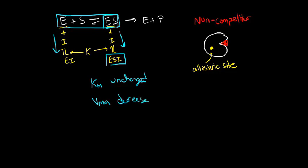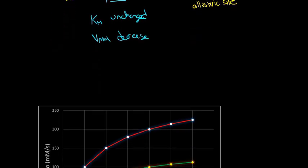Okay, so for non-competitive inhibitor, we see the same Km but a smaller Vmax. Let's see how this is going to change our graphs.